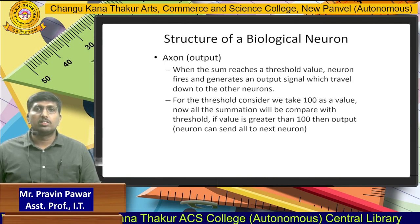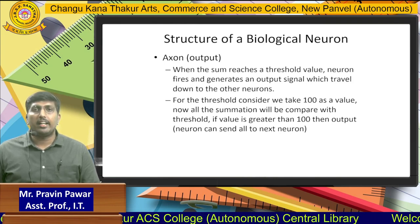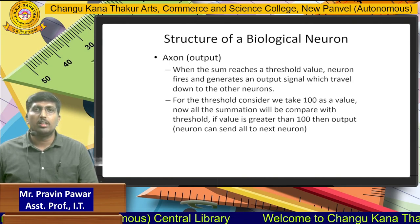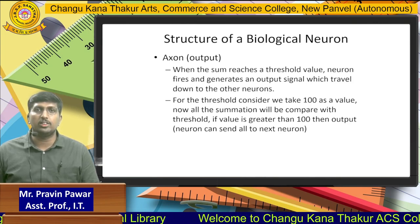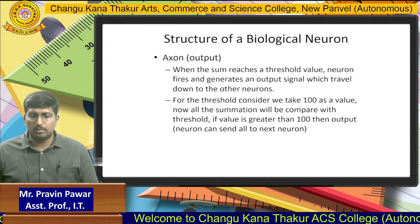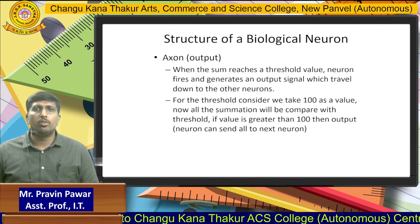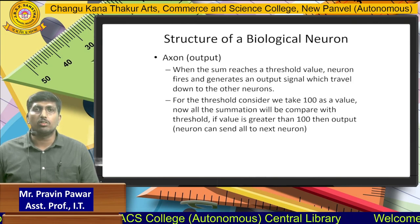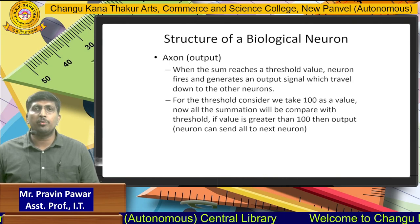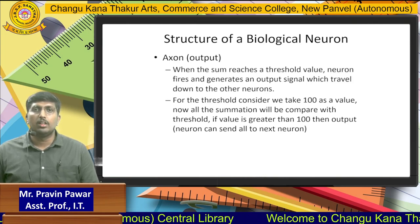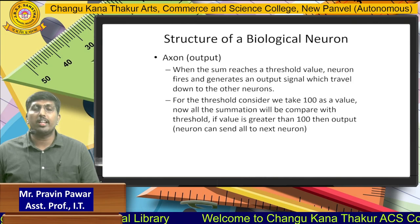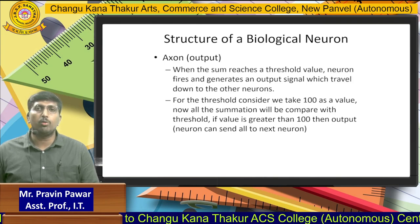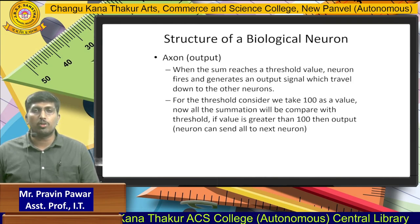The next part is the axon. In soft computing it is known as the output, and in biological neurons it is known as the axon. When the sum reaches the threshold value, the neuron fires the output signal and it travels down to other neurons. The axon handles communication between two devices — when a CPU generates output, it needs to be transferred to the user so they can understand the result.